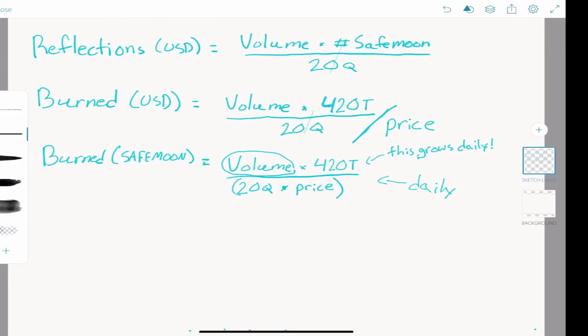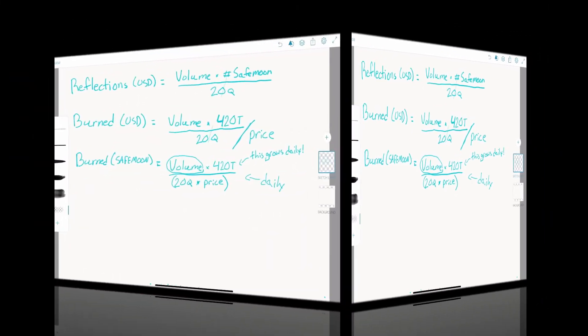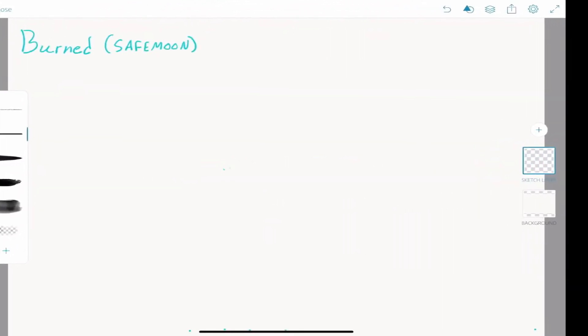We can pull in the equation for compounding interest and relate it to our SafeMoon tokenomics to accurately predict where the burn wallet will be in the future. The equation for compounding interest can be calculated as follows: the new balance equals your previous balance multiplied by 1 plus the rate divided by n, raised to the nt.